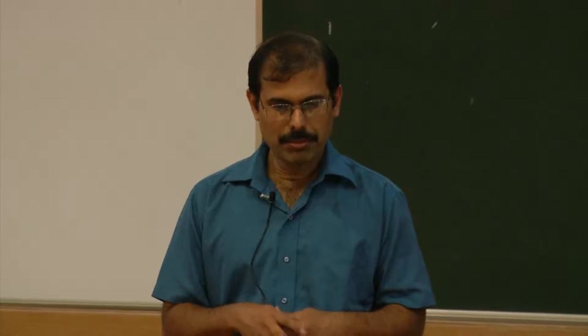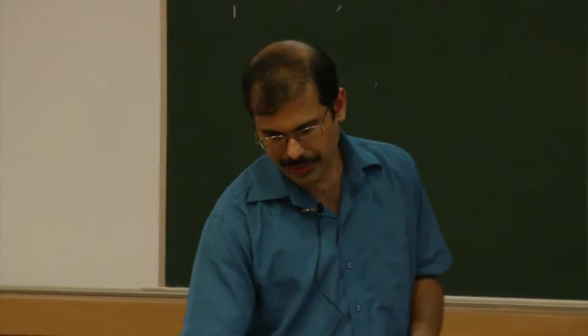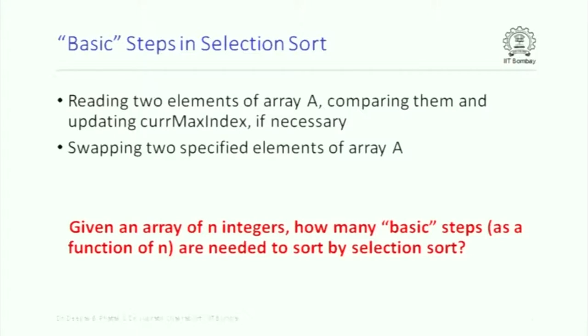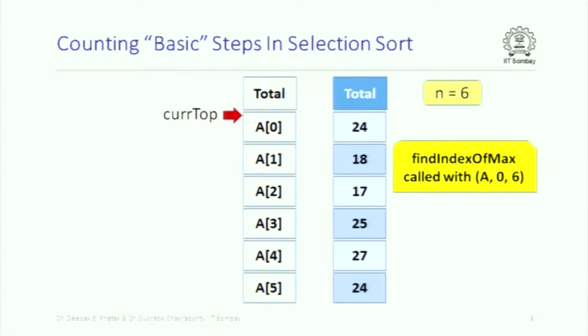So that is what we mean by a basic step — it is a certain abstract notion. To do a computation involved in a basic step takes some fixed amount of time independent of the size of the input problem. We are going to count how many such basic steps are needed in selection sort and in particular what this number is as a function of n. Here is our array of size 6, so n is 6. Initially current_top is at 0 and we want to find the index of the maximum element in the part of the array between a[0] and a[5].